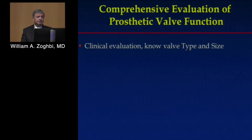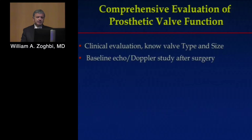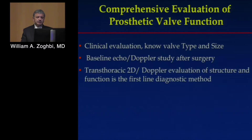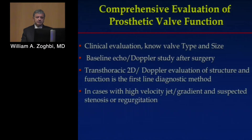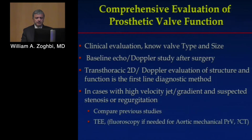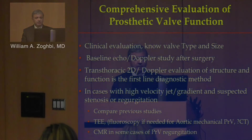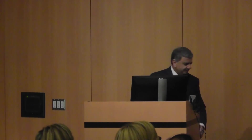In summary: perform clinical evaluation, know the valve type and size, get a baseline echodoppler after surgery or intervention, and use transthoracic echo as the first-line diagnostic method for high-velocity gradients and suspected stenosis or regurgitation. Compare to previous studies whenever possible. TEE is important for mitral position; for the aortic position consider fluoroscopy or CT. CMR can be useful in some cases of prosthetic valve regurgitation for quantitative criteria. Be as integrative as possible.